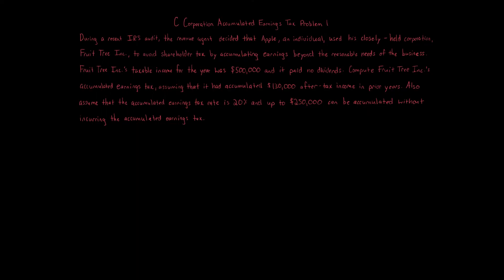C corporation accumulated earnings tax problem one. During a recent IRS audit, the revenue agent decided that Apple, an individual, used his closely held corporation Fruit Tree Inc to avoid shareholder tax by accumulating earnings beyond the reasonable needs of the business. Fruit Tree Inc's taxable income for the year was $500,000 and it paid no dividends. Compute Fruit Tree Inc's accumulated earnings tax assuming that it had accumulated $130,000 after-tax income in prior years. Also assume that the accumulated earnings tax rate is 20%.